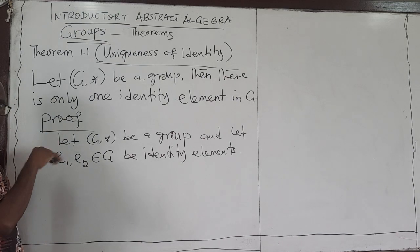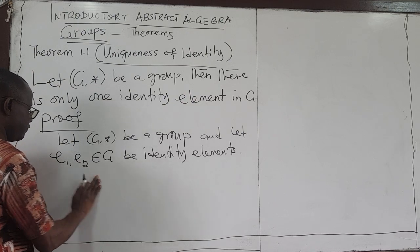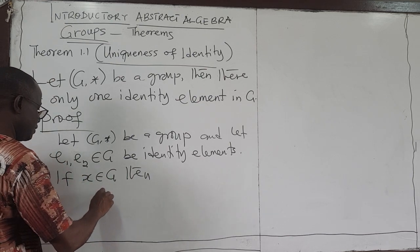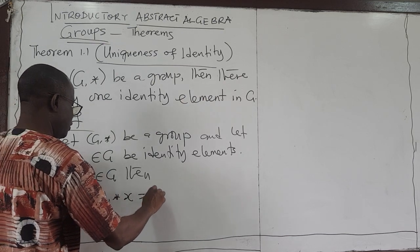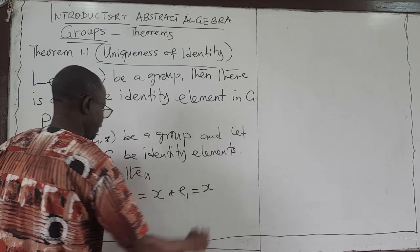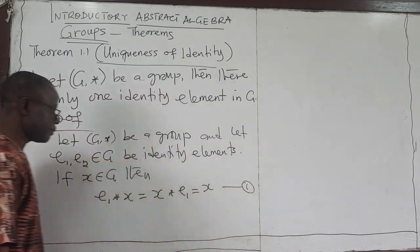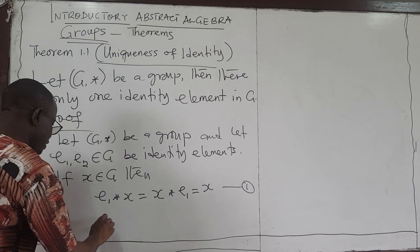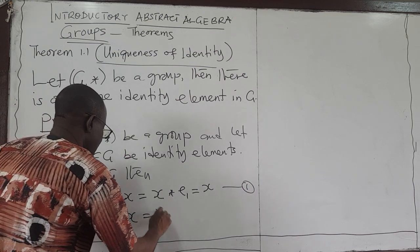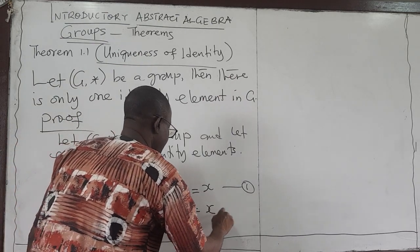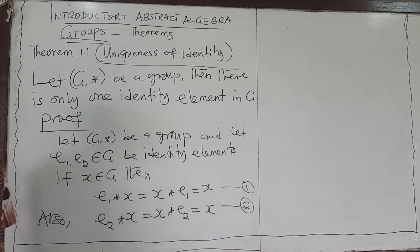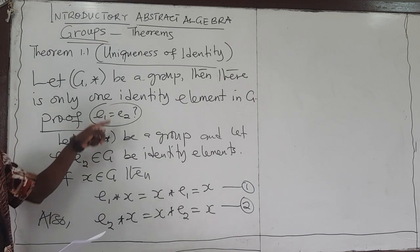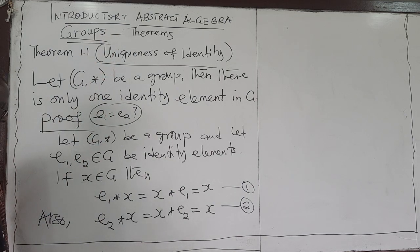If E1 is an identity element, then from the definition of a group, for any element X in G, since E1 is an identity element, E1★X = X★E1 = X. Call this equation 1. Also, since we are supposing E2 is an identity element, E2★X = X★E2 = X. The question is: how do you prove that E1 equals E2? Once we show this, we have shown that the identity element is unique.